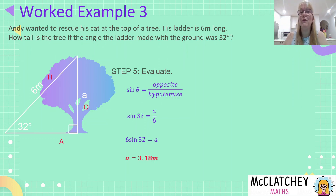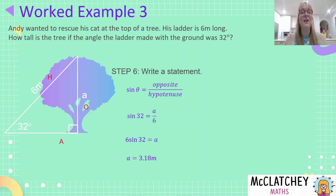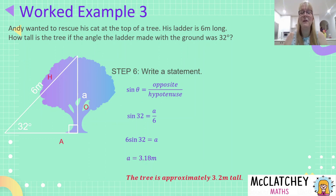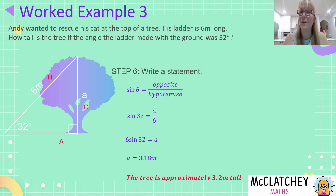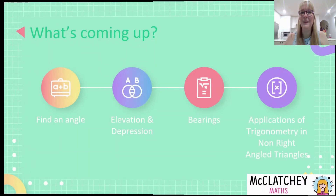Type 6 sin 32 into your calculator and press equals — a equals 3.18 meters. Since this is a worded problem, we write a statement: the tree is approximately 3.2 meters tall. I've rounded to a more reasonable number for a real-life context since the question didn't specify decimal places, and I've used the word 'approximately' as a caveat.